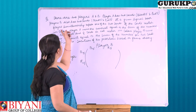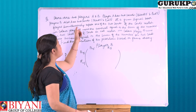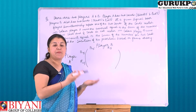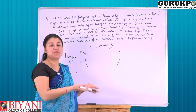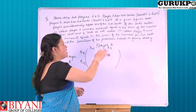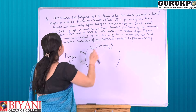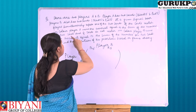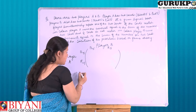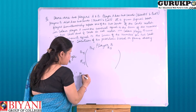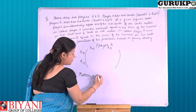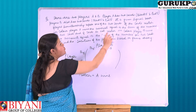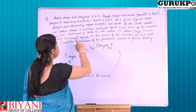At a given signal, both players simultaneously expose one of their two cards. If the cards match in colour, player A wins an amount equal to the sum of the numbers on the two cards. If the cards do not match in colour, player B wins.